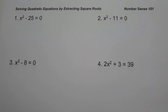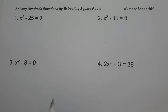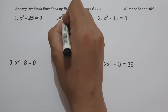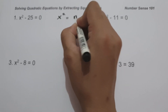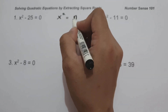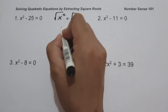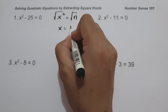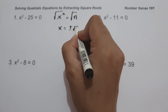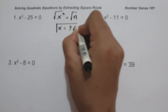For today's video, we are going to solve quadratic equations by extracting square roots and we are going to explain in detail how to get the answer. To find the value of x, we must write the given equation in the form x² = n. And if we are going to find the value of x, we are going to take the square root of both sides, giving us positive and negative square root of n.